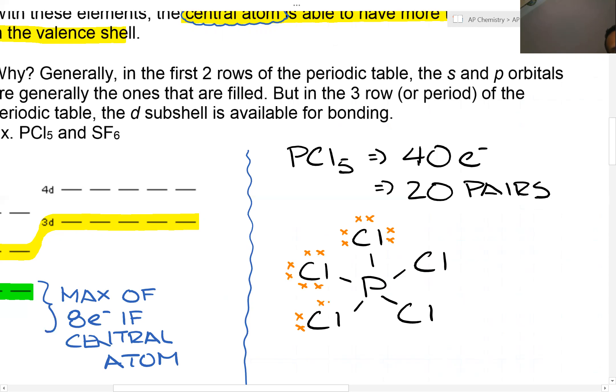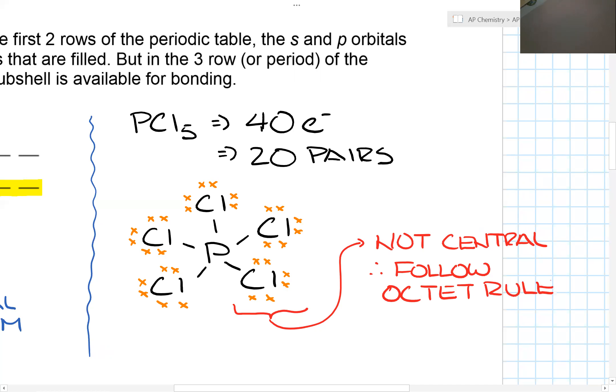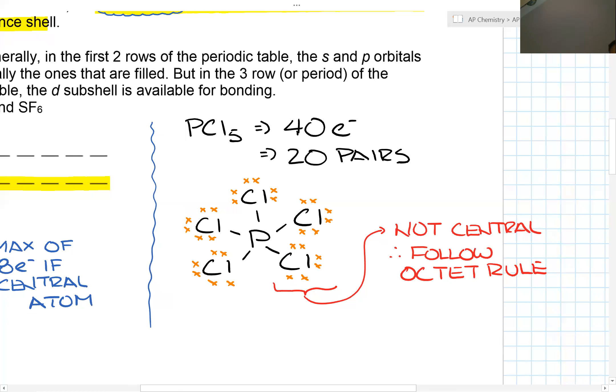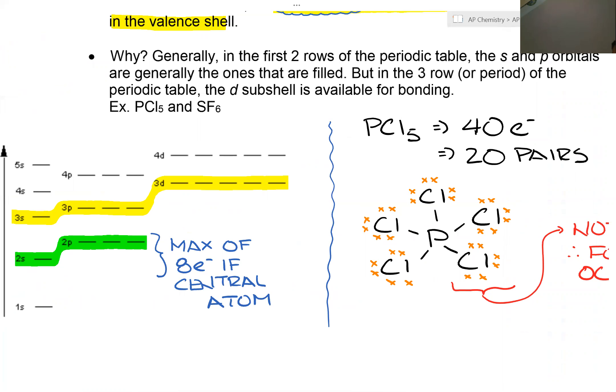You might say, Mr. Chan, chlorine is also in the third period. So why should it have only eight electrons? Because it is not the central atom. So in this case, for chlorine, here is not central. Therefore, it needs to follow the octet rule. If you look at phosphorus, phosphorus is able to have more than eight electrons because of the fact that it's the central atom, and it's found in the third row, and as a result, it has the 3P 3D orbitals available for bonding.